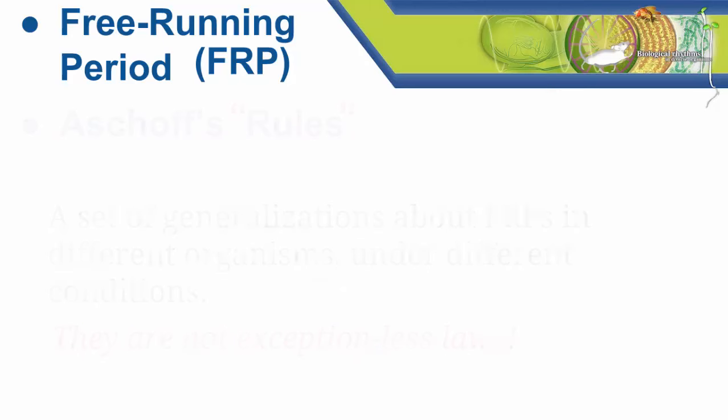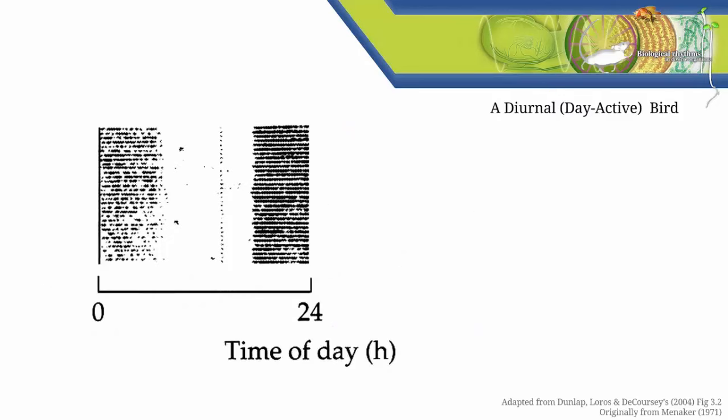Let's start now with our first topic, FRPs. To show you what an FRP is we're going to start with this actogram. This actogram looks pretty messy mainly because it's showing you real data from a live bird. Just like in any other actogram, here each row is representing one day's worth of data. The black marks show when the bird was active.